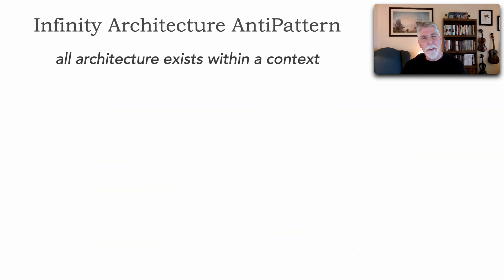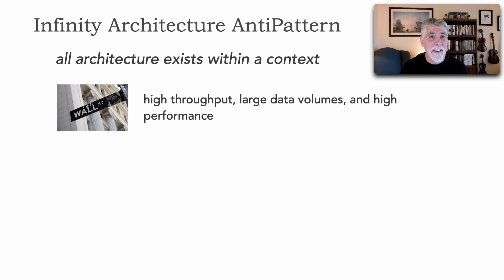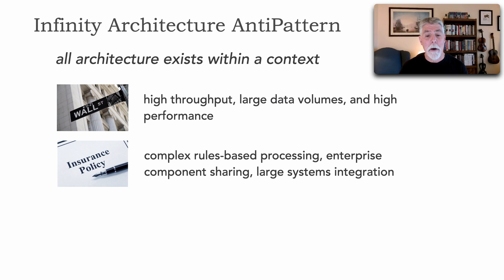One way to avoid this anti-pattern is what I used to call domain-based architecture — thinking about the problem domain and what architectural characteristics are needed for it. For example, in financial stock trading, high throughput, large data volumes, and super-high performance are what's needed — a generic architecture won't satisfy these needs. It differs greatly from insurance companies, which have really complex rules-based processing, enterprise component sharing — which is why service-oriented architecture was always such a good fit in insurance — and large systems integration of heterogeneous systems.